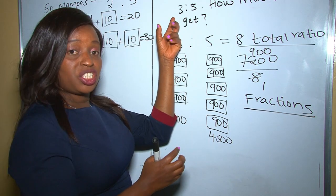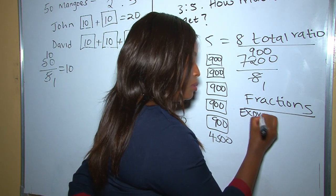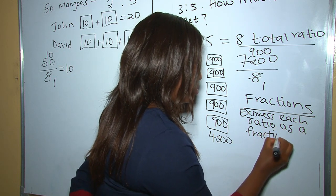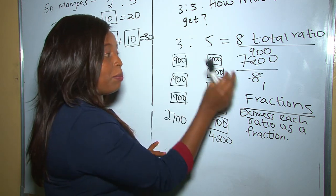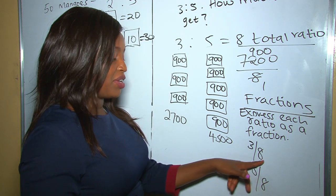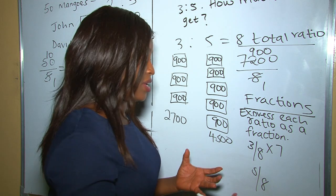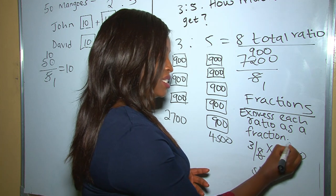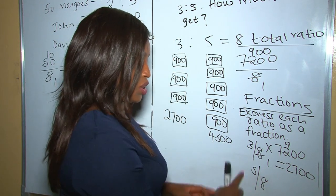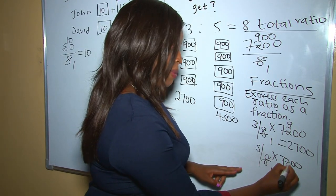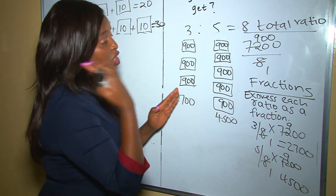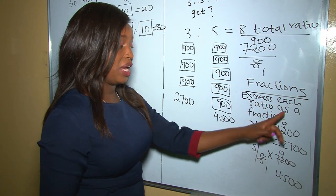You can also use fractions — express each ratio as a fraction of the total. 3 expressed as a fraction of the total is 3 over 8, and 5 is 5 over 8. Multiply each fraction by 7200: (3/8) × 7200 = 2700, and (5/8) × 7200 = 4500. So instead of the division method, you can express each ratio as a fraction of the total.